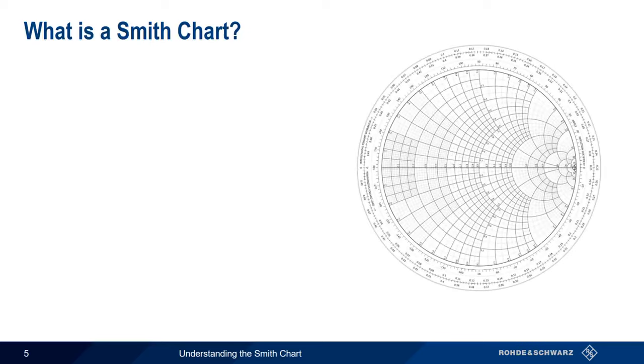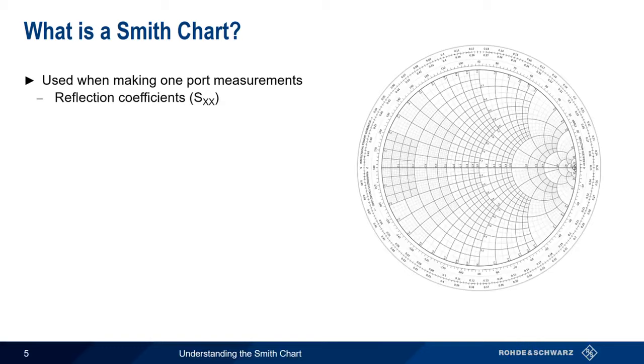The Smith Chart is used when making one-port measurements, that is, when measuring the reflection coefficients. Another way of saying this is that the Smith Chart shows us the load impedance, Z sub L, relative to the source impedance, Z sub 0.